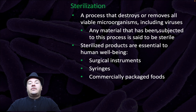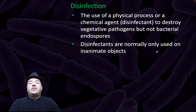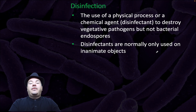Sterilization is a process that destroys or removes all viable microorganisms, including viruses. Any material that has been subjected to this process is said to be sterile. Sterilized products are essential to human well-being — for example, surgical instruments, syringes, and commercially packaged foods. Disinfection is the use of a physical process or a chemical agent called a disinfectant to destroy vegetative pathogens but not bacterial endospores. Disinfectants are normally only used on inanimate objects.